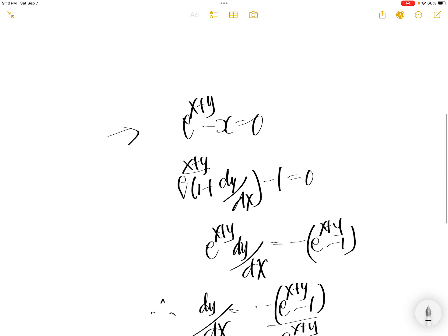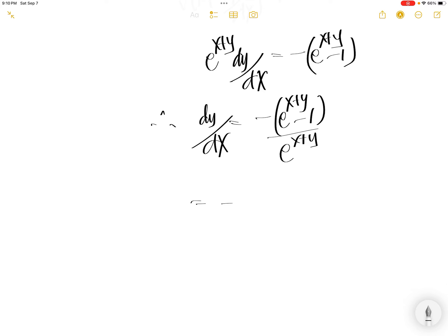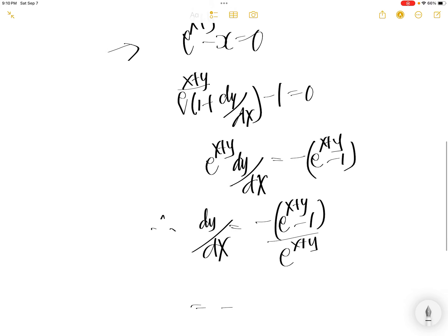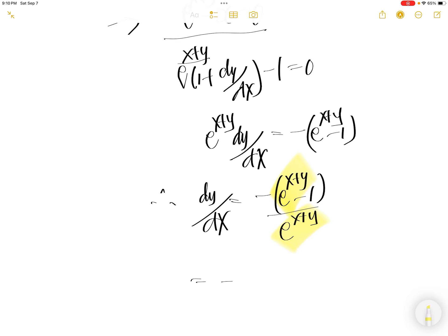Here, e to the power x plus y minus x equals 0, so e to the power x plus y is equal to x. Replace these two things with x.